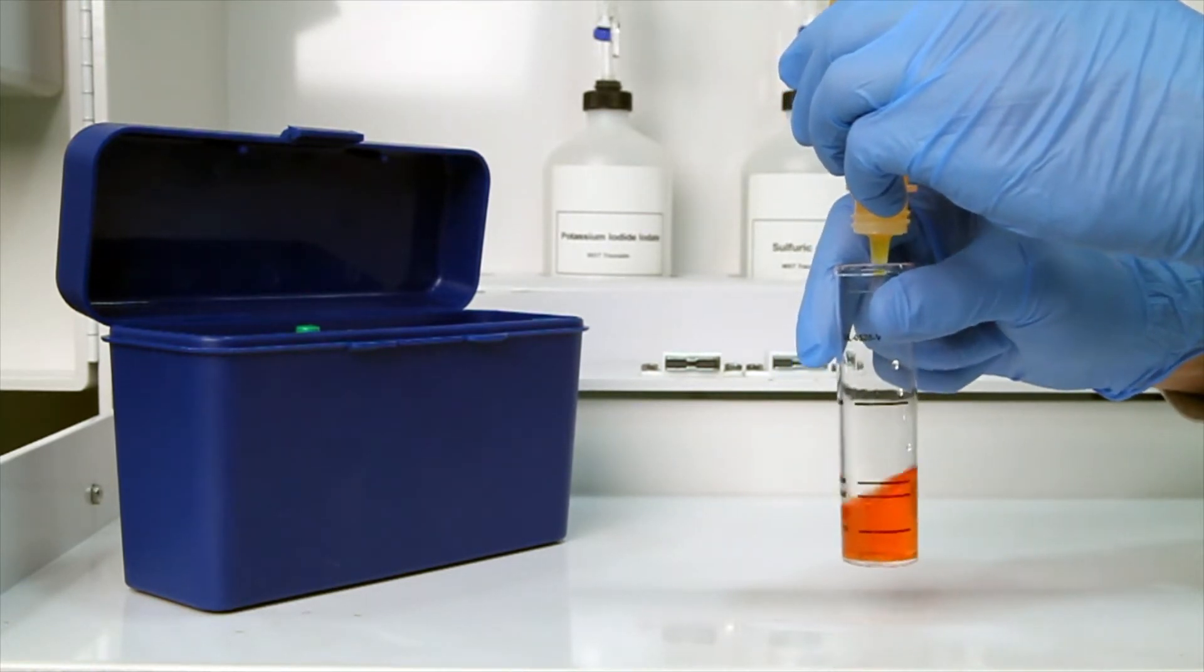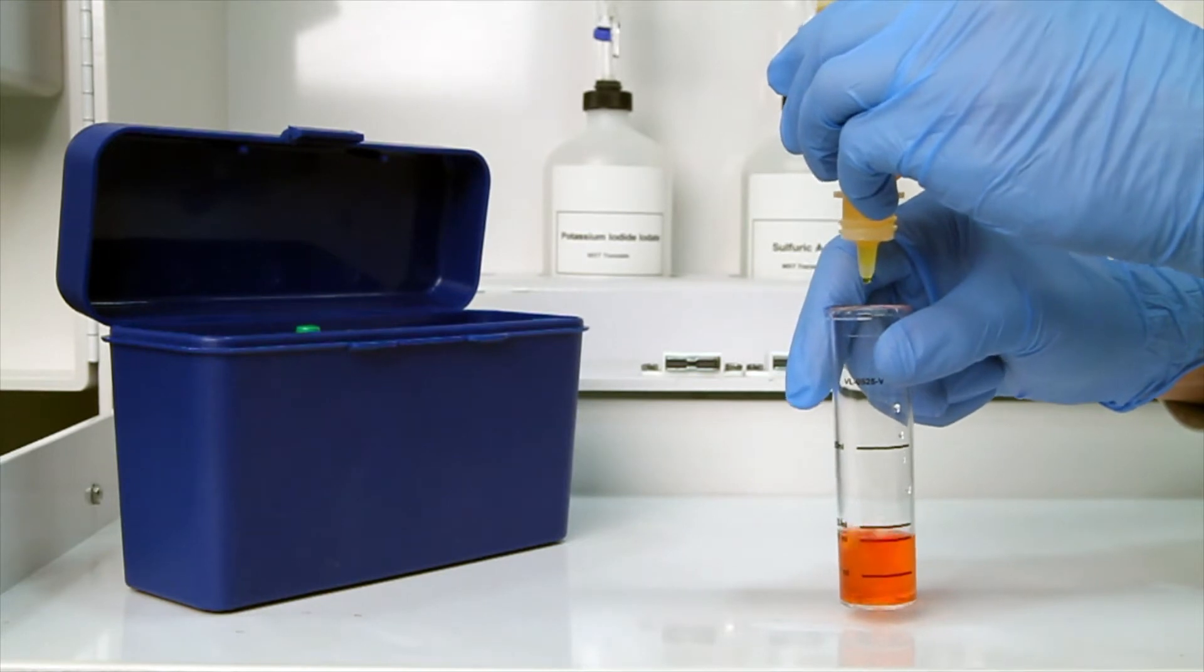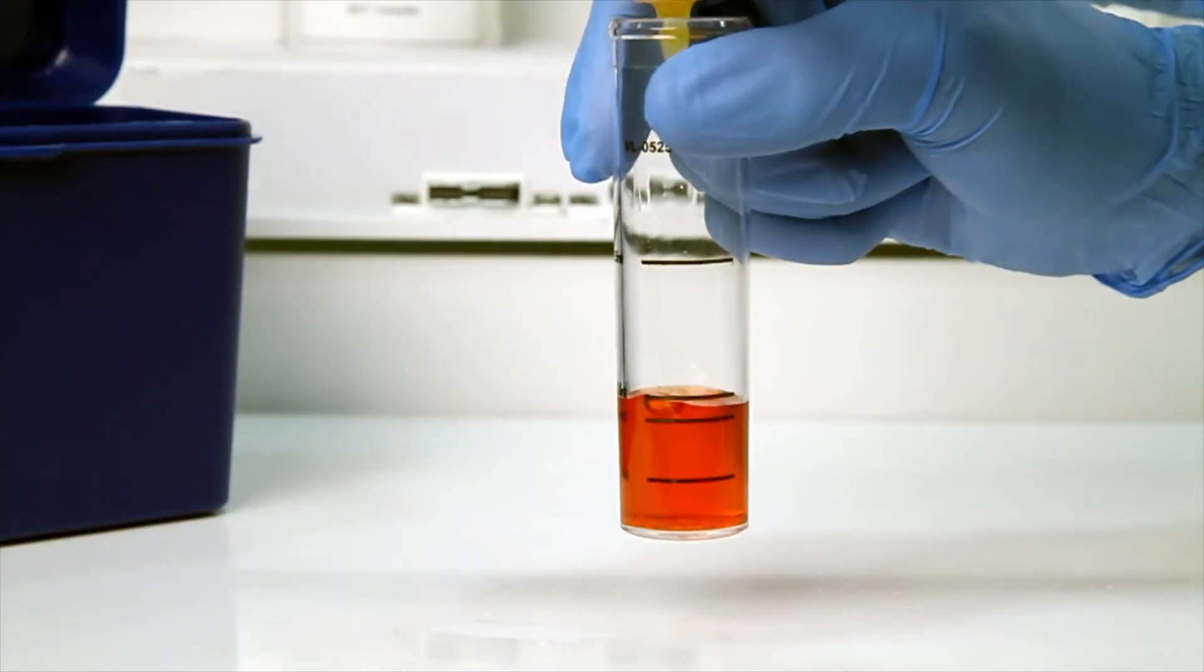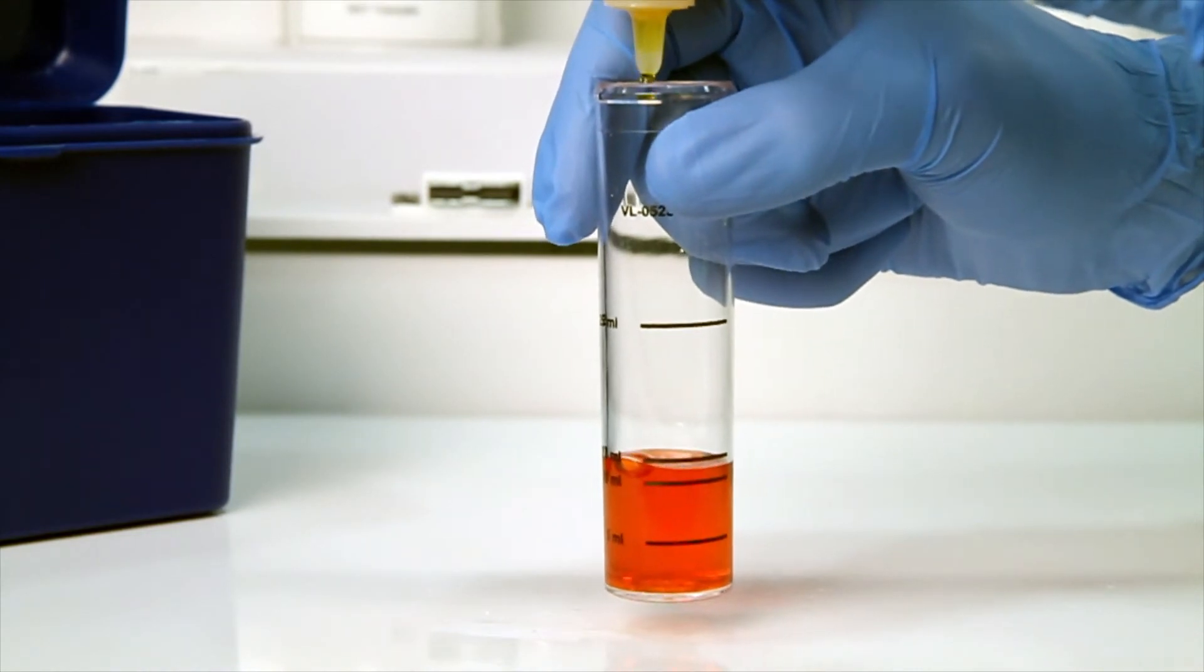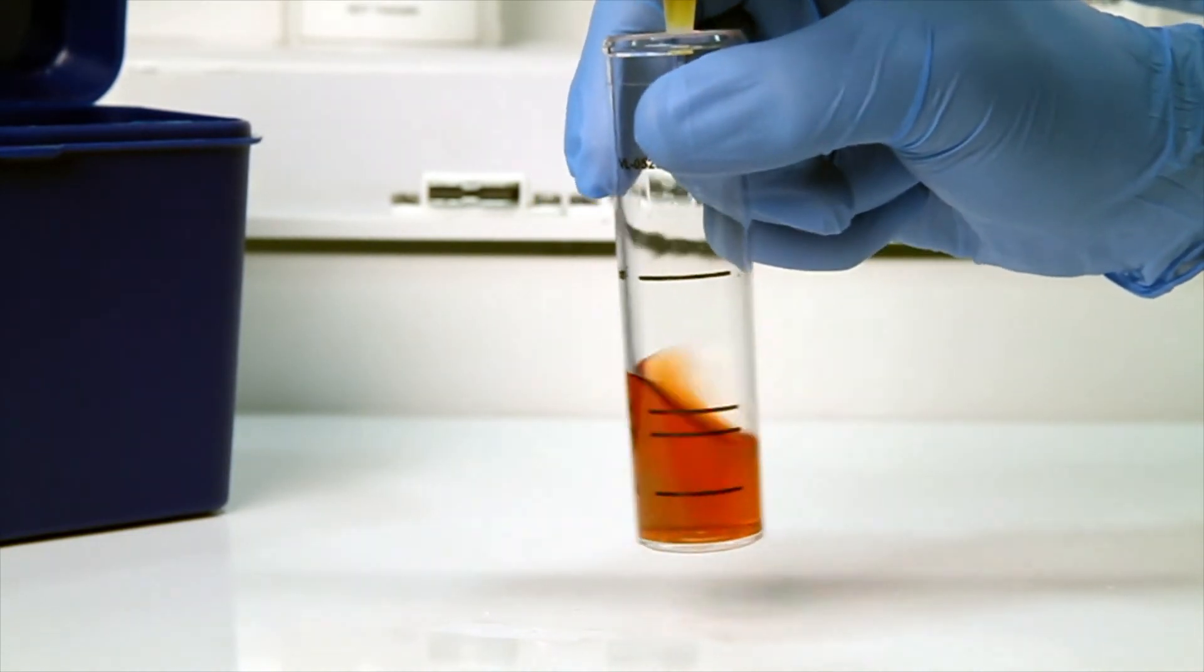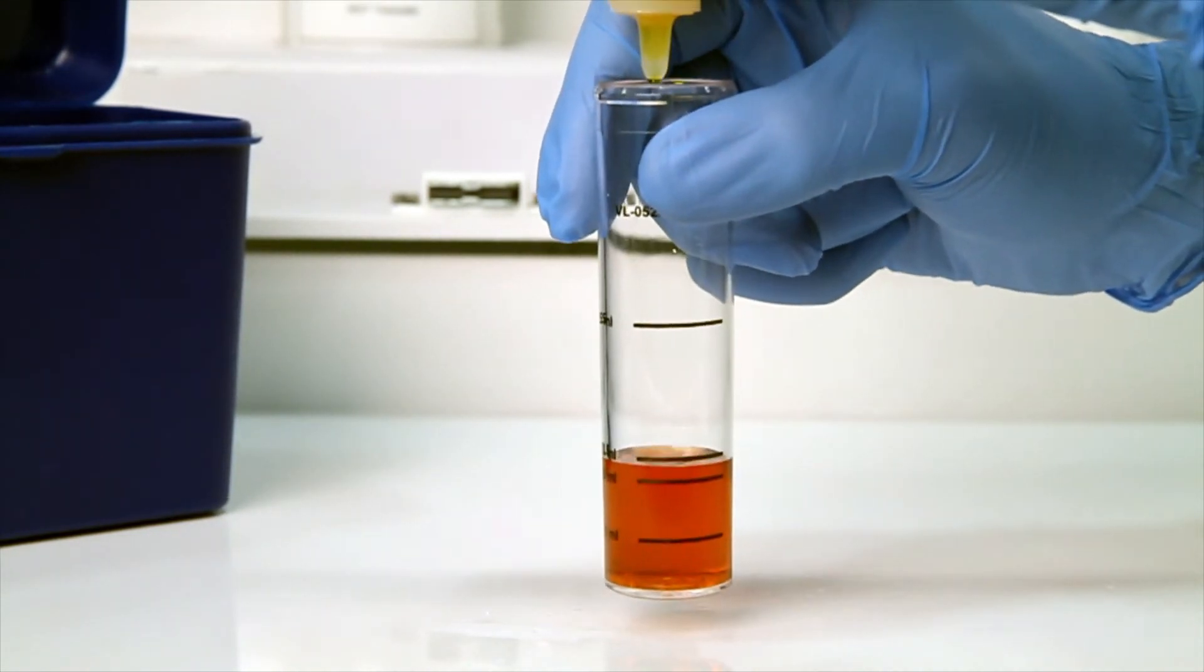The bottle contains a dropper tip, so it's important to hold the bottle vertically to get a consistent drop size. After the addition of each drop of titrant, swirl the vial to make sure the sample is properly mixed. Count the number of drops during this step.